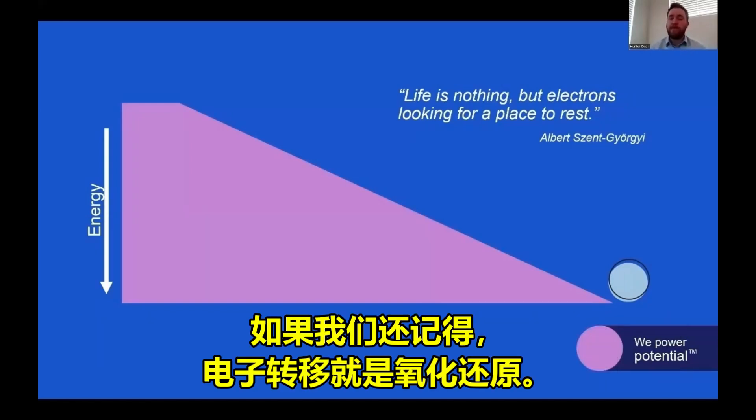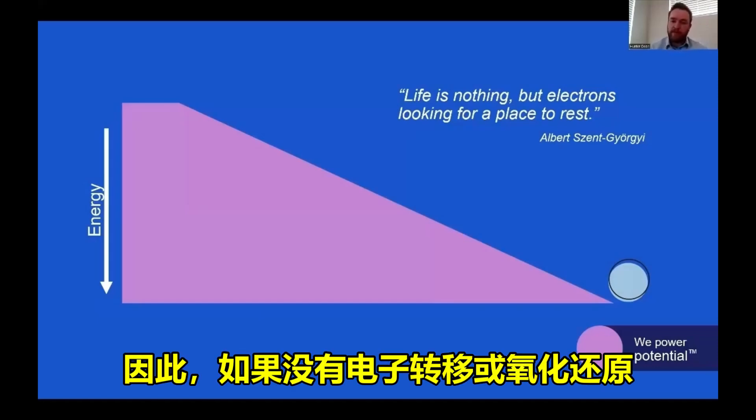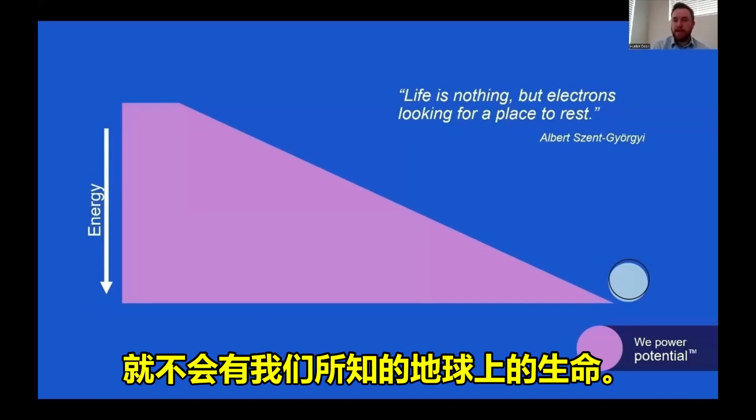And if we remember, the transfer of electrons is redox. So if you don't have the transfer of electrons or redox, you do not have life on this planet as we know it.